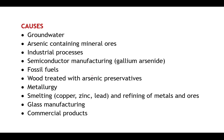Next is arsenic poisoning. Causes include groundwater — arsenic may get mixed with groundwater which, if consumed, may result in exposure and poisoning. Other causes include arsenic-containing mineral ores, industrial processes where persons working in such areas may get affected, and semiconductor manufacturing where gallium arsenide is the offending agent.